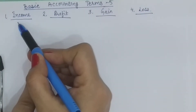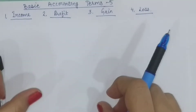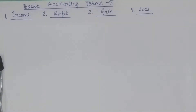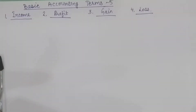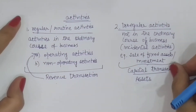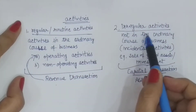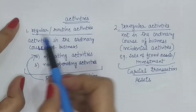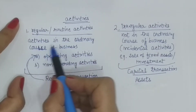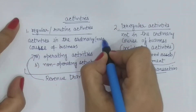To understand the difference in income, profit and gain, hume samajhna hoga ki business activities konse hoti hain. Kisi bhi business mein jo activities ho rahi hain, unhain hum doh parts mein broadly divide karte hain: routine or regular activities, and irregular activities. Routine or regular activities are the activities in the ordinary course of business — yeh business ke normal activities ka part hain.